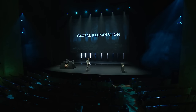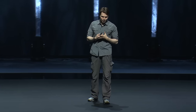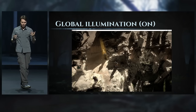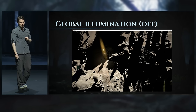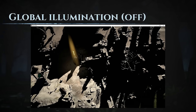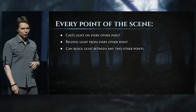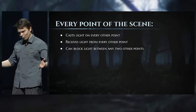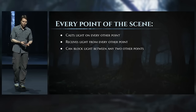Last but not least, probably my proudest achievement: global illumination. Global illumination is the process of light bouncing between surfaces. Each point of the scene casts light onto every other point, receives light from every other point, and can block light between arbitrary other points. This many-to-many interaction is notoriously hard to calculate. I dare to say it's the hardest problem in computer graphics.